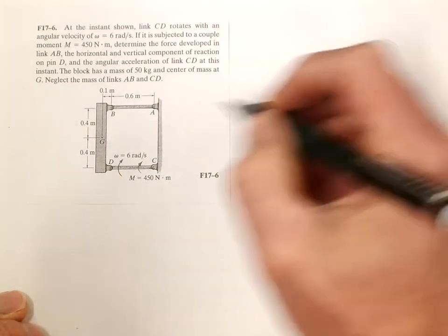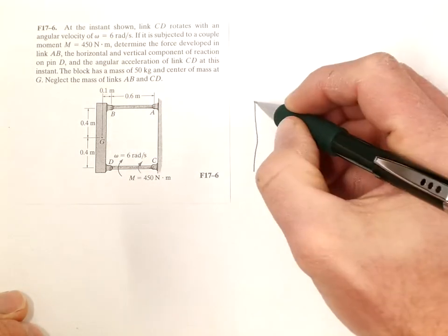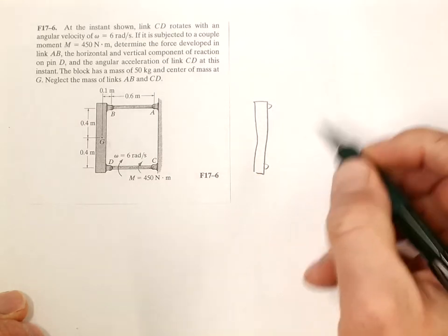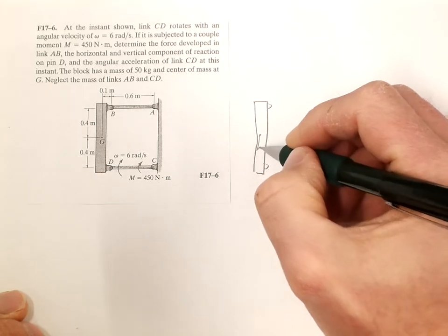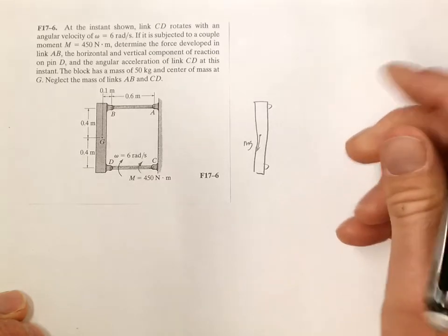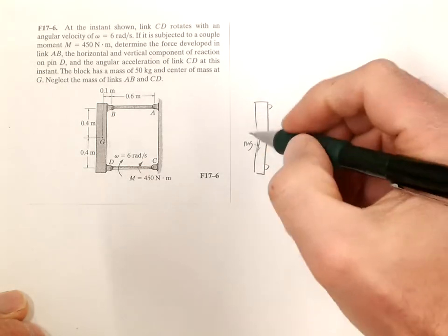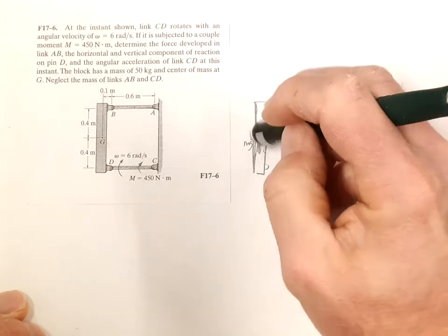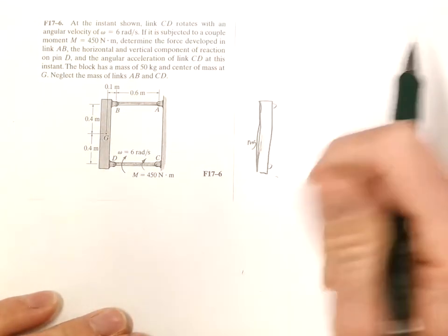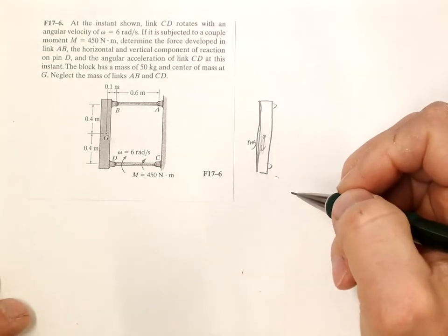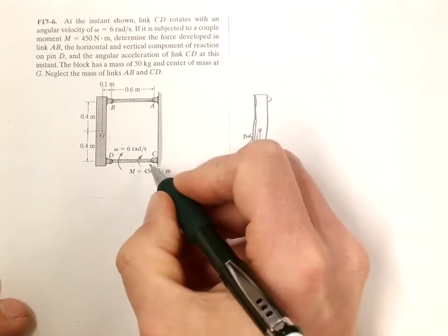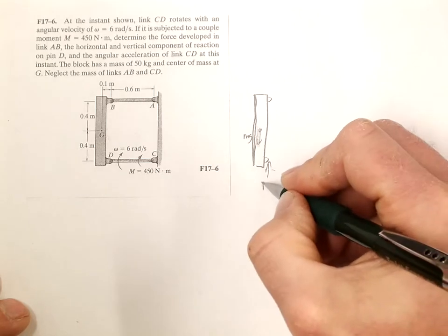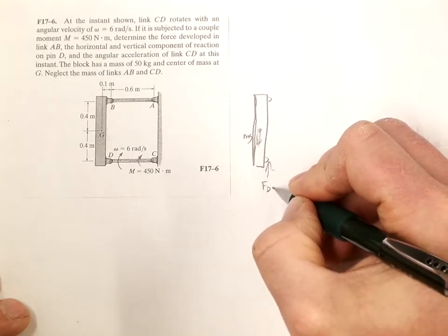Let's start by drawing a free body diagram. Got little bumps here, MG down, and this rod has a moment on it so it's obviously pushing up, so we'll have a force at D in the Y direction.